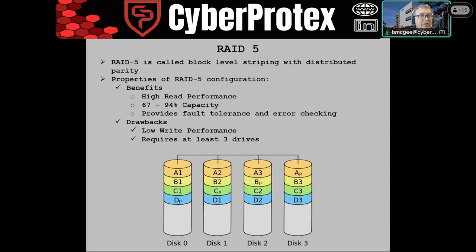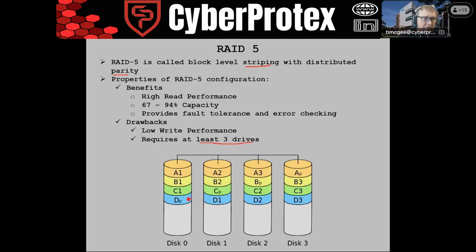One of the more common configurations we see is block striping with parity. You need at least three drives for this. On each drive, one of the blocks is reserved for parity. So in disc one, disc two, disc three, and disc four — I've highlighted it — each has a designated parity block.